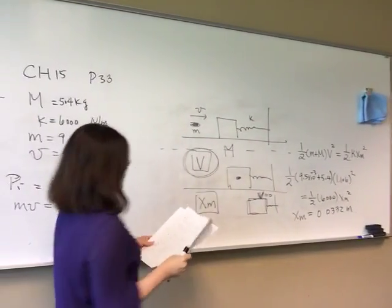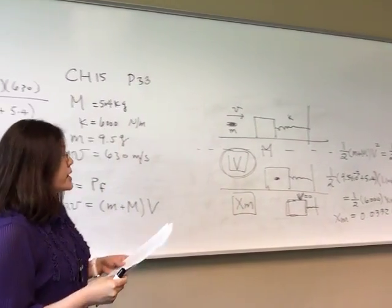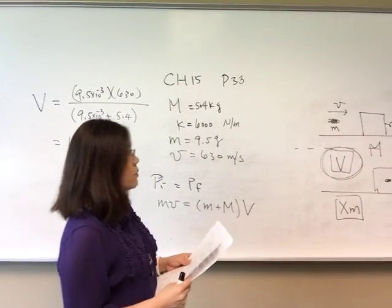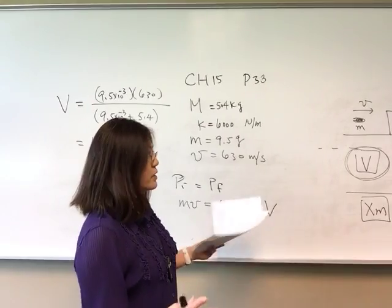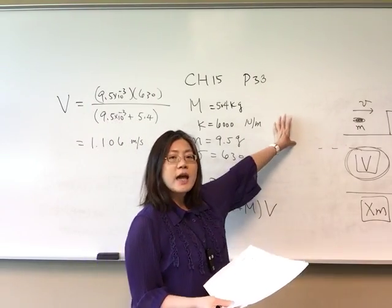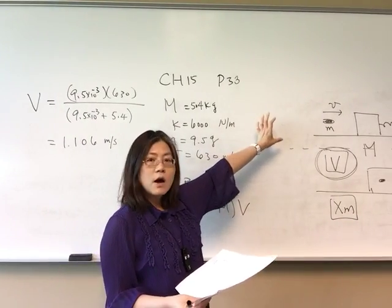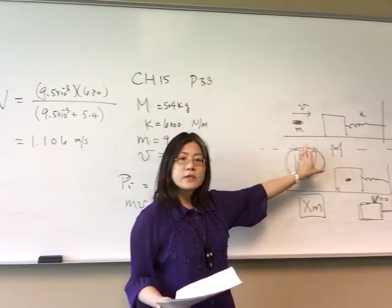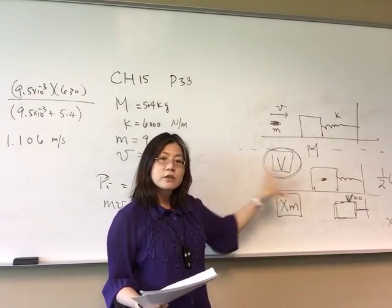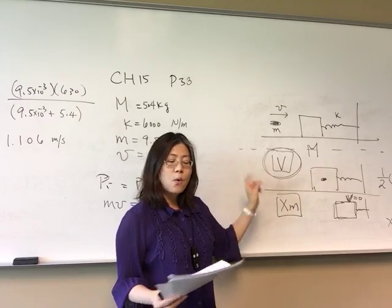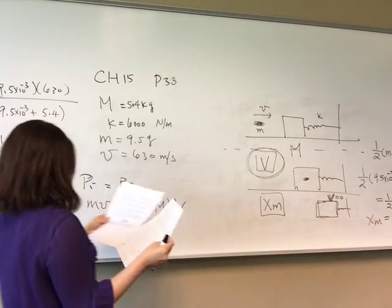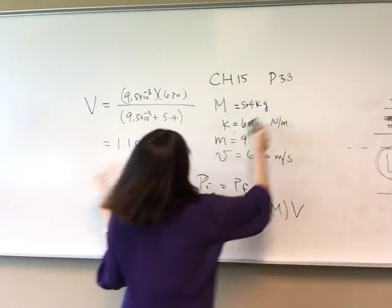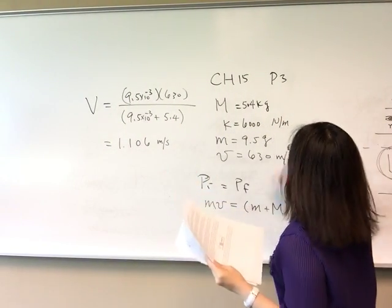This is very similar to chapter 9 collision problems. Initially, energy is not conserved but momentum is conserved. After collision, energy is conserved and converts from one form to another. That completes problem 33.